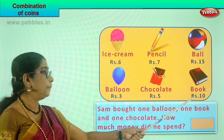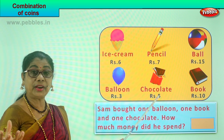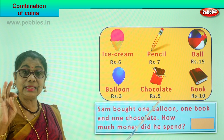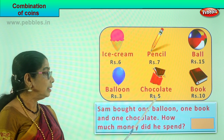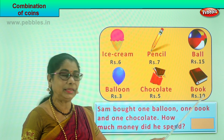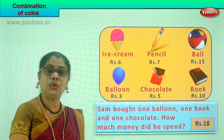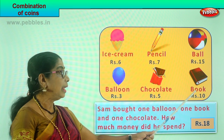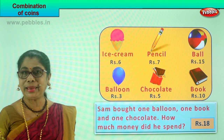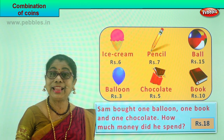Let's add them all. Balloon three rupees, book ten rupees — ten plus three is thirteen. Chocolate five rupees — thirteen plus five: thirteen, fourteen, fifteen, sixteen, seventeen, eighteen. Or five plus three is eight, and eight plus ten is eighteen rupees. Sam spent a total of eighteen rupees, took out eighteen rupees in coins, gave it to the shopkeeper, and got a book, chocolate, and balloon. Sam is very happy!